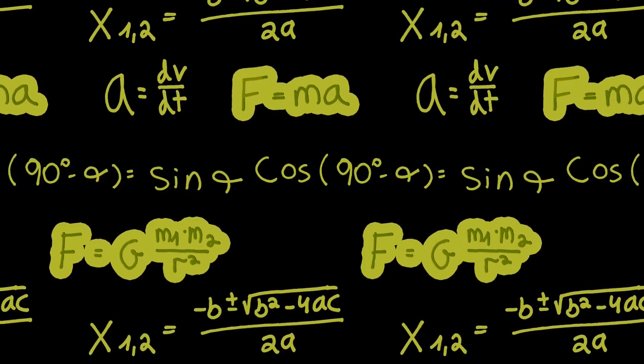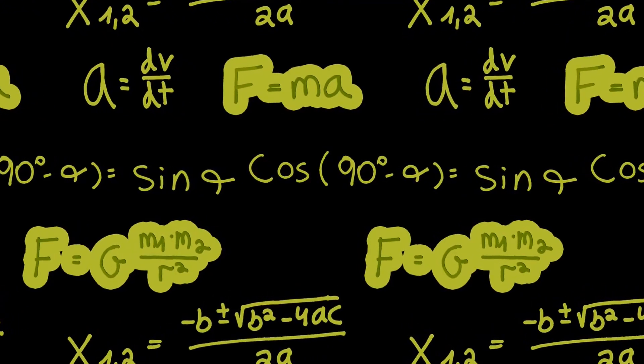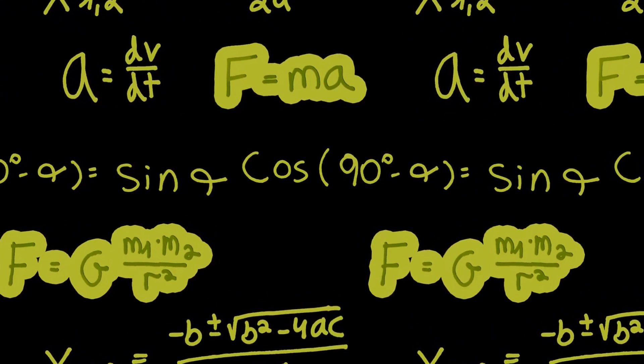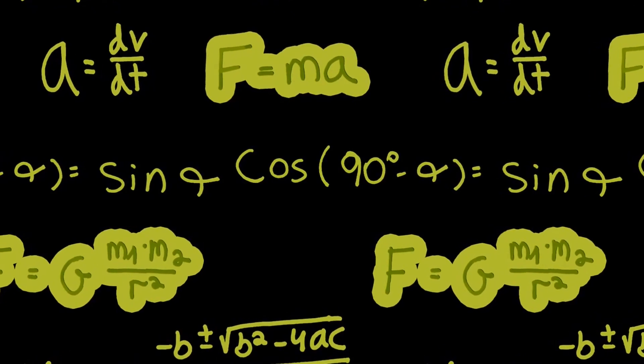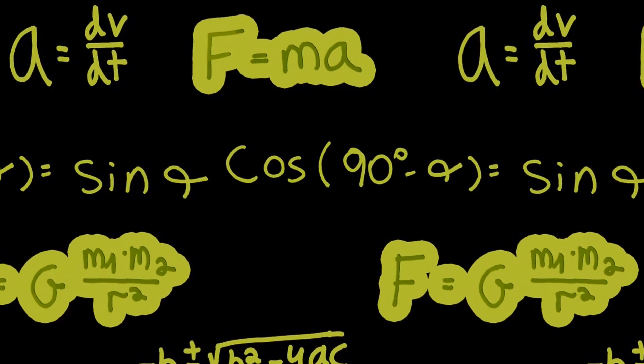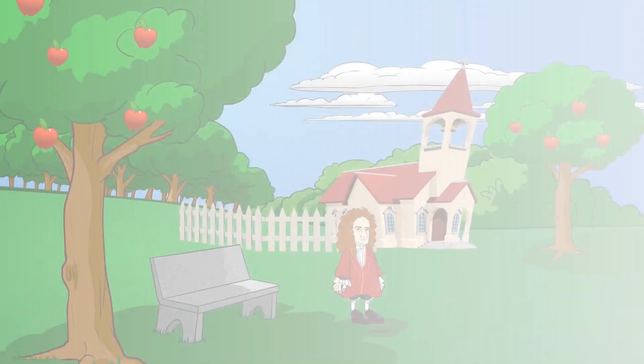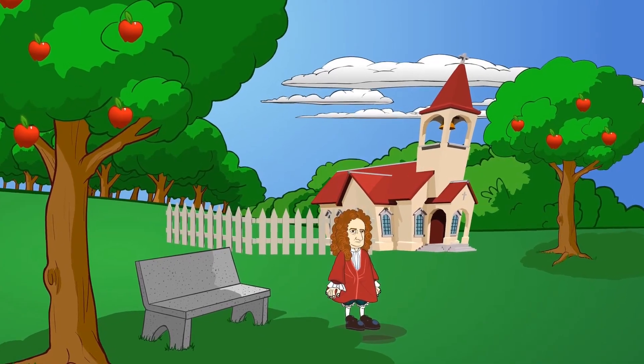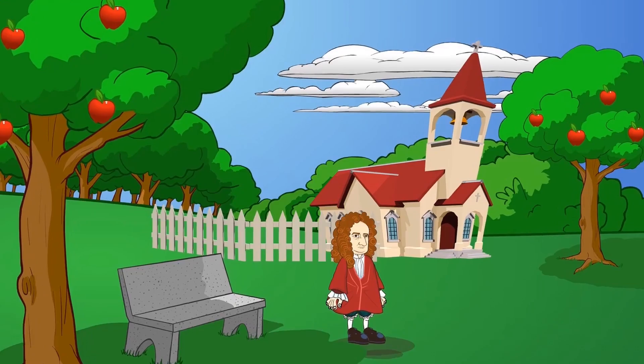For example, if a person pushes on a wall, he exerts force on the wall. According to Newton's third law, a wall acts on a person with the same force, but in the opposite direction. This law shows us that forces always exist in pairs and cannot exist in isolation.